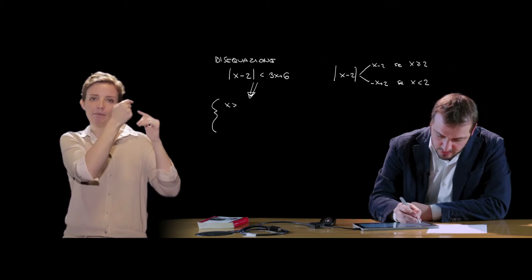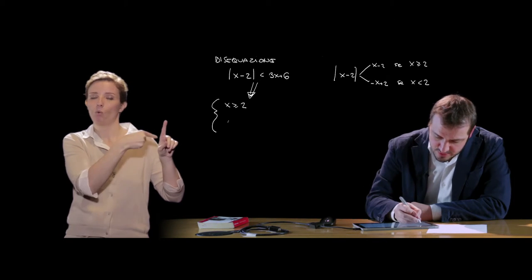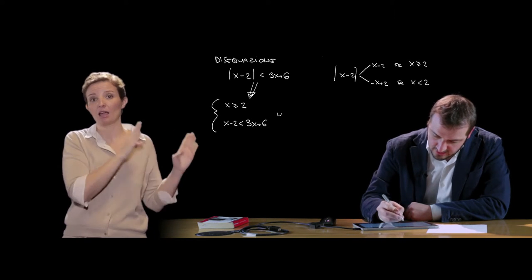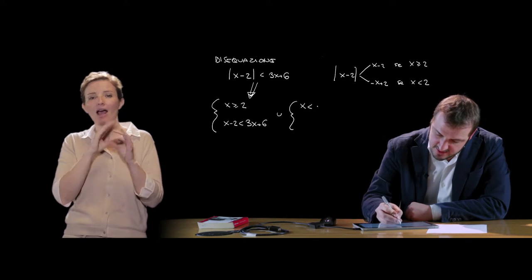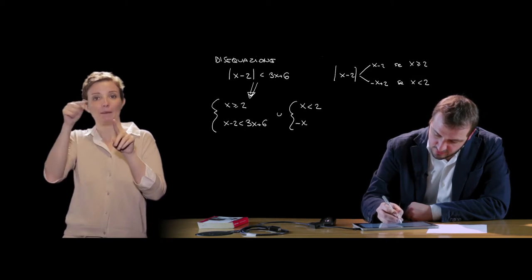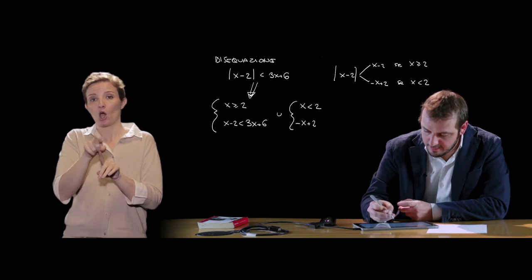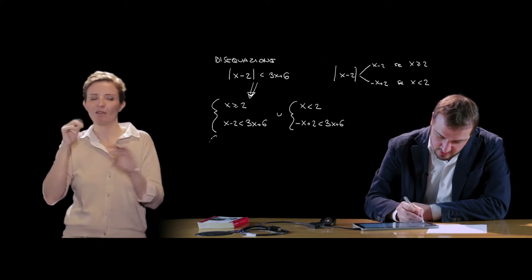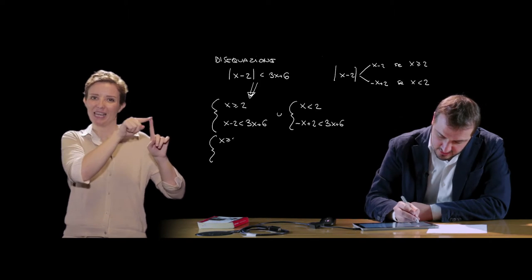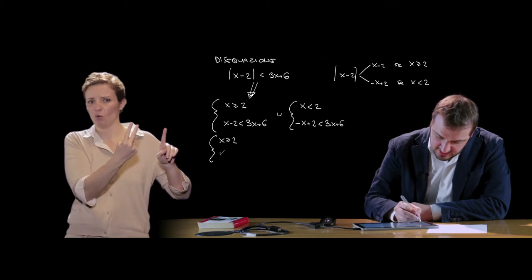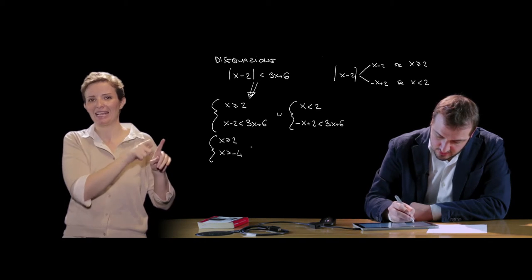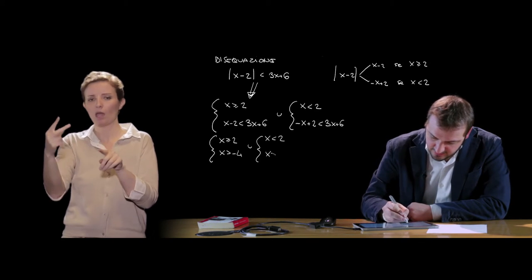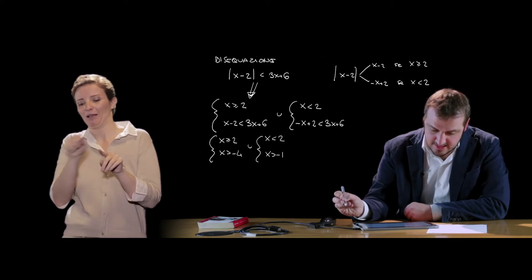This inequality transforms into two systems: the first studied when x ≥ 2, giving x - 2 < 3x + 6; the second when x < 2, giving -x + 2 < 3x + 6. Solving the first system, the solution is x > -4, combined with x ≥ 2. For the second system, the solution is x > -1, combined with x < 2.